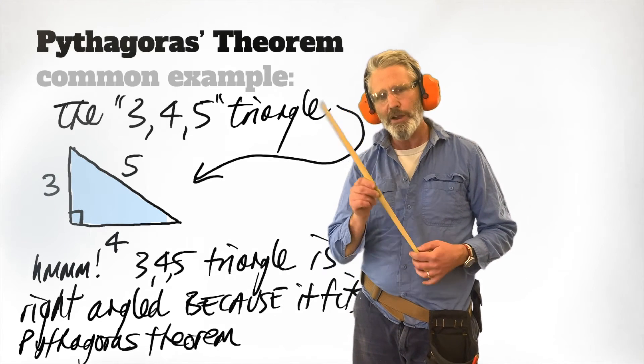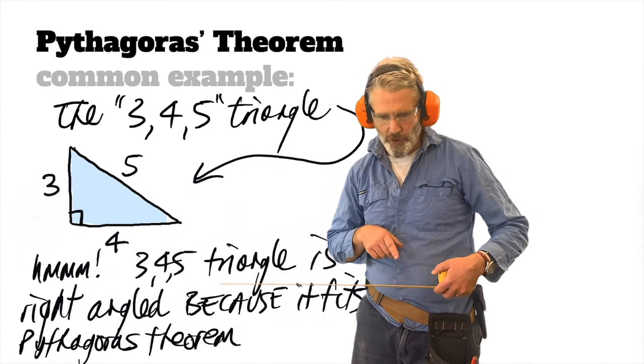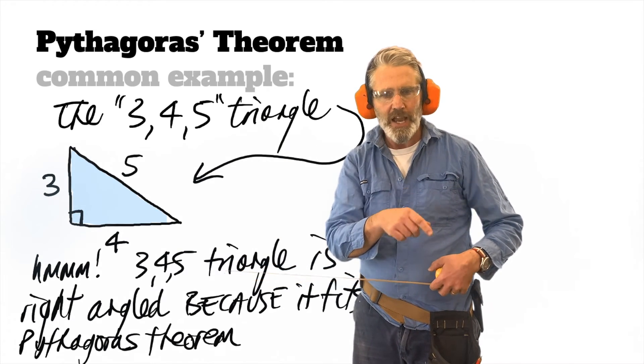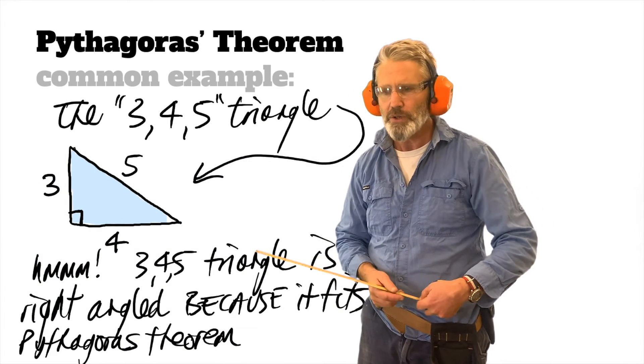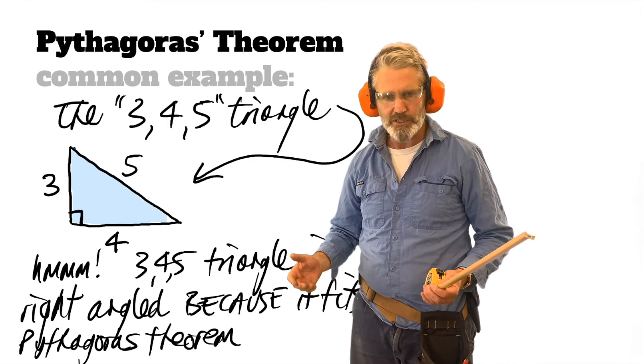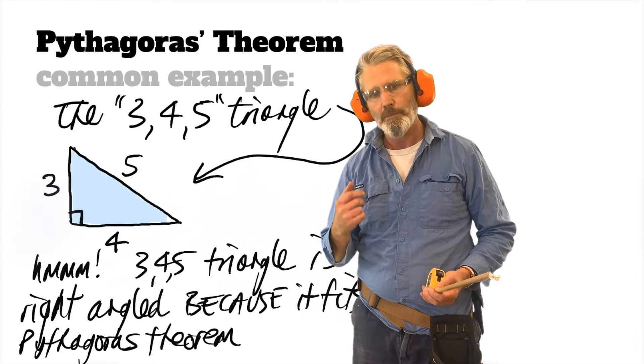So in other words, if we measure 3 meters along one side, 4 meters along another side, and if we made the diagonal or the hypotenuse to be 5, then you would have this really big right-angled triangle that's 3 meters by 4 meters by 5 meters.